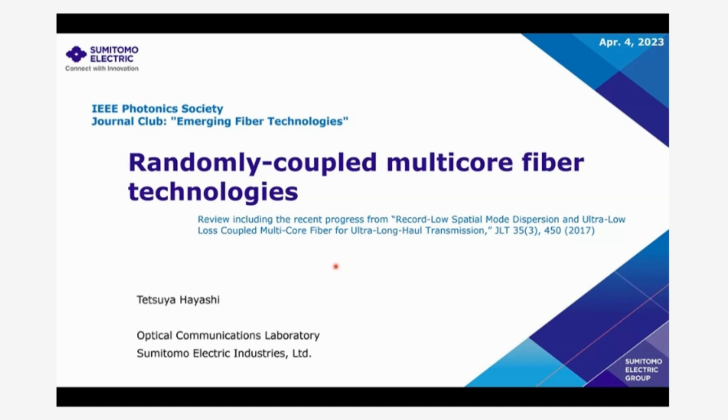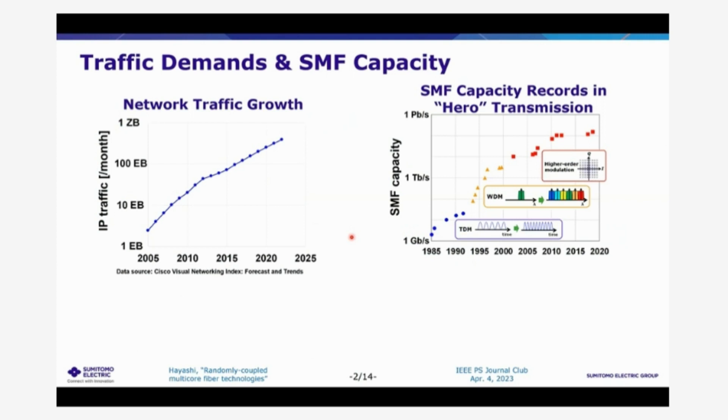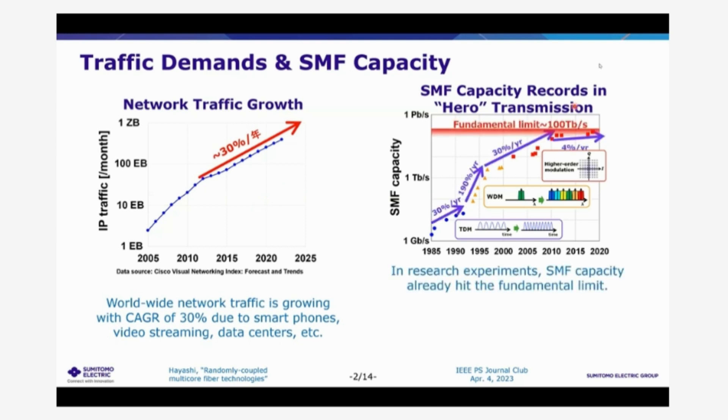My JLT paper, I'd rather want to include more recent results with a review of randomly coupled multi-core fiber technologies. So the network's traffic is growing exponentially and to support such an exponential growth of the network, single-mode fiber capacity is also increasing, exponentially increasing in the research field.